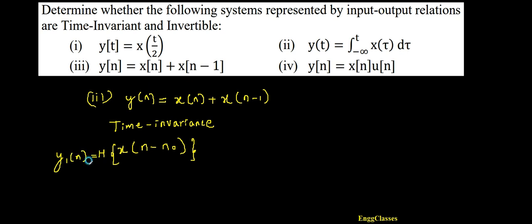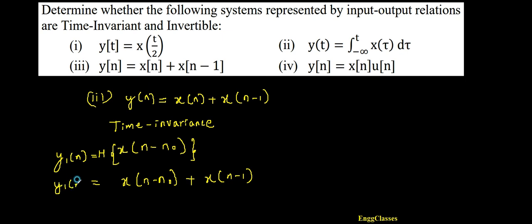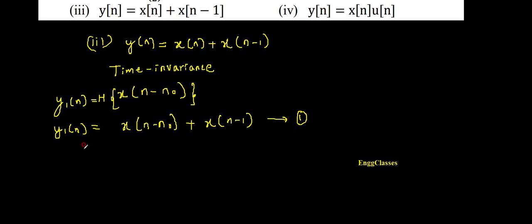I apply this shifted input x(n - n₀) to the system with operator H, so I get the output y1(n). What is the output going to be? That depends on the nature of the system. The system takes whatever is fed at the input and adds x(n-1) to get the output. So now instead of x(n), I have applied x(n - n₀). Therefore y1(n) = x(n - n₀) + x(n - n₀ - 1). This is equation number one.